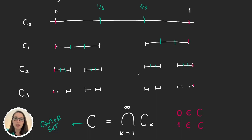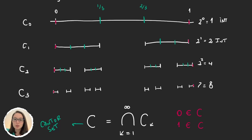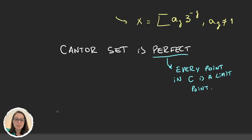Let's see how many intervals we have at each stage. In step zero we have one interval, which is 2^0. In step one we have two intervals, so 2^1. In step two we have 2^2 intervals, and in step three we have 2^3. In general, C_k has 2^k intervals.